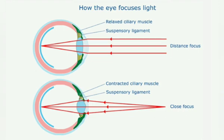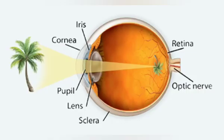When viewing nearby objects, the ciliary muscles that hold the eye lens in place contract, and the lens becomes rounder and thicker, so the focal length decreases. This ability of our eye to adjust its focal length for nearby as well as distant objects to form a sharp image on the retina is called accommodation.